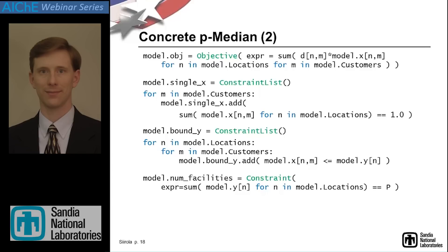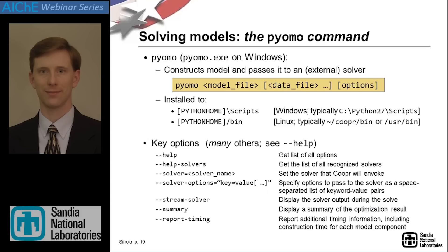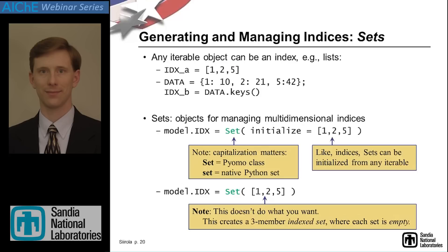That is a complete model. To solve it, we pass PyOMO the model file, and for abstract models we'd also pass data and solving options. The most commonly used options include streaming the solver output to see what the solver is doing, seeing a summary of results, and specifying the solver — right now our default solver is still GLPK, so you'll almost always pass --solver to specify the solver of your choice.